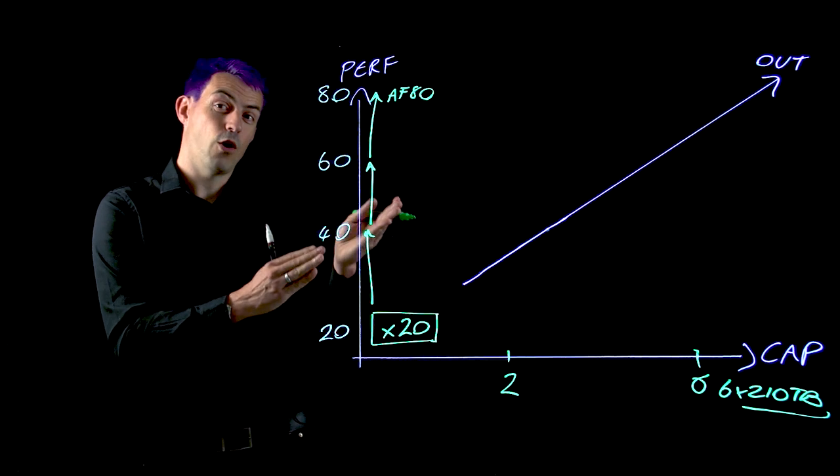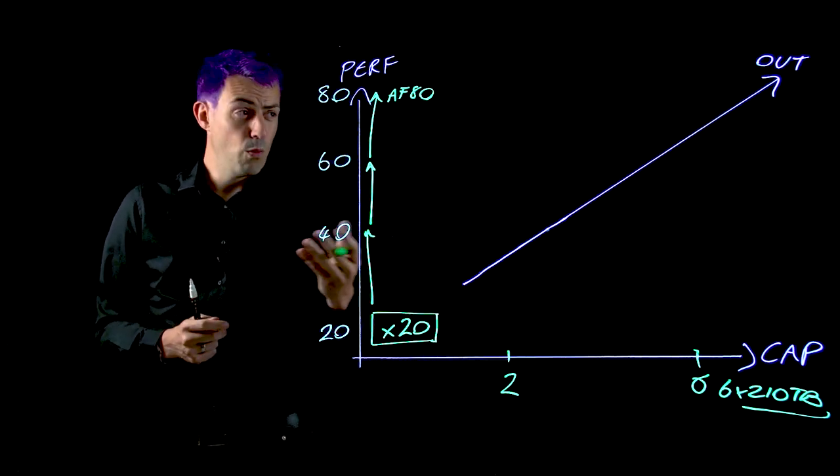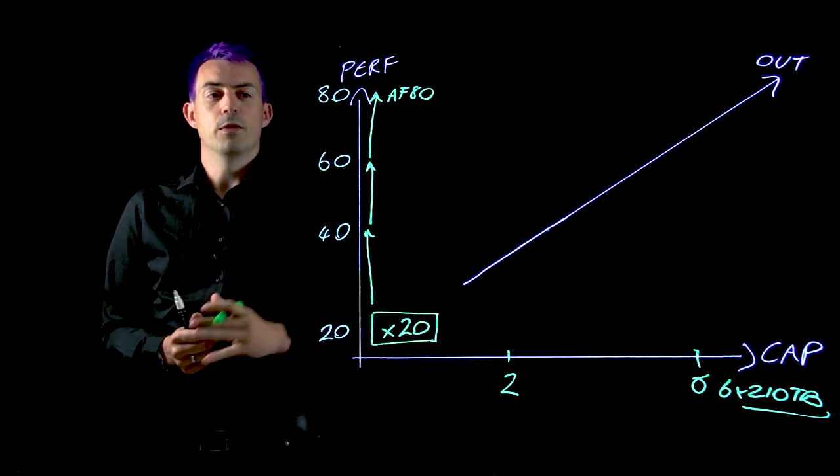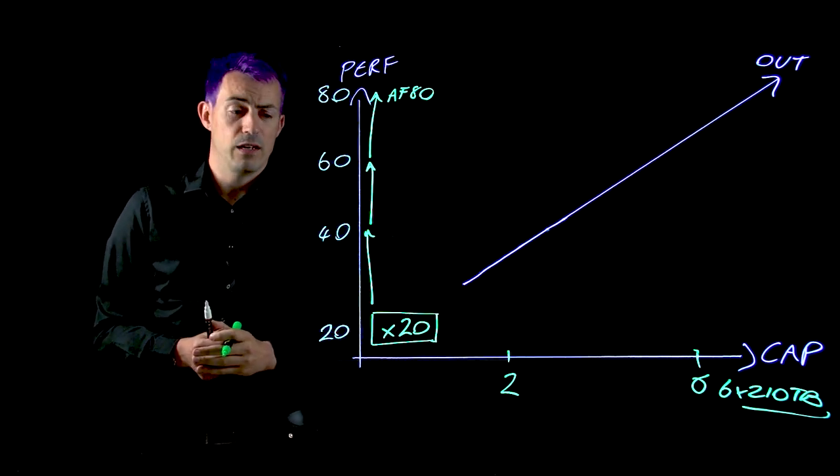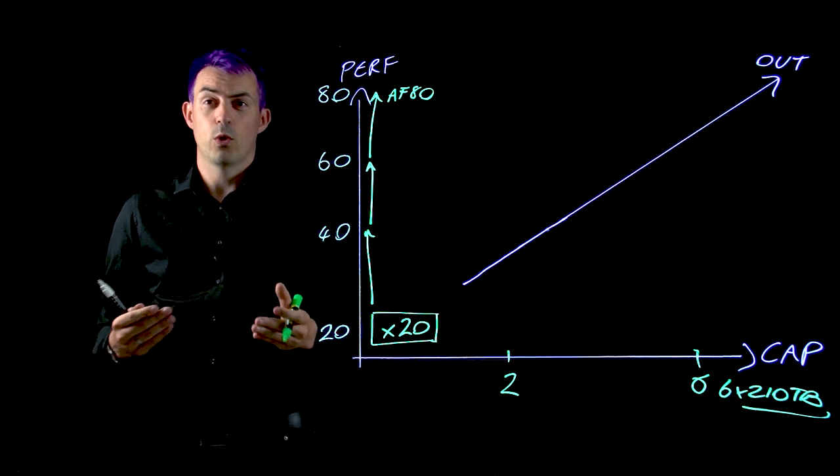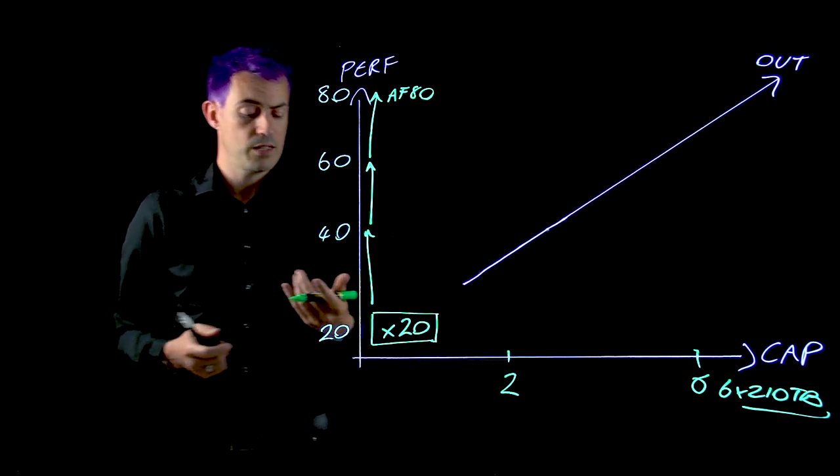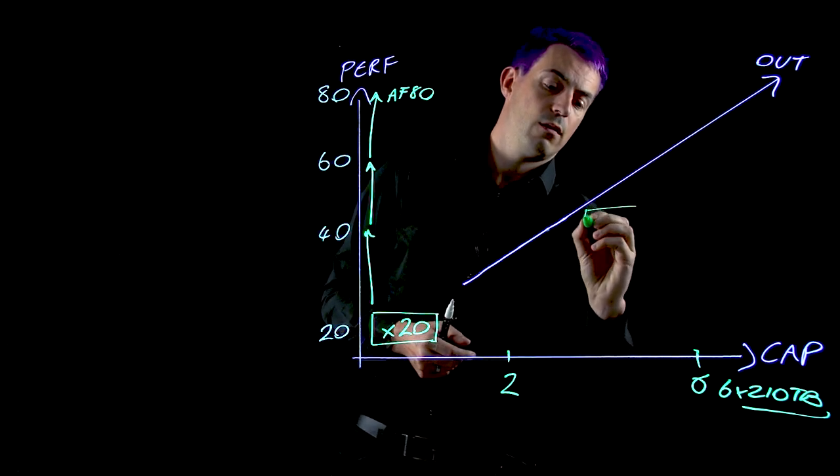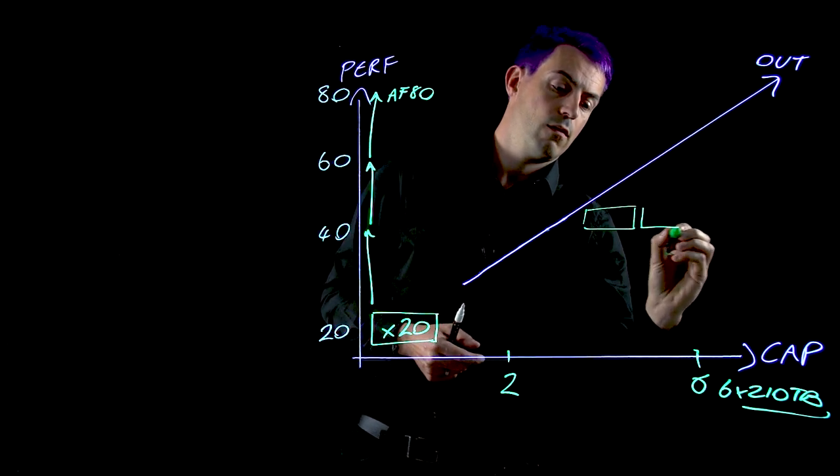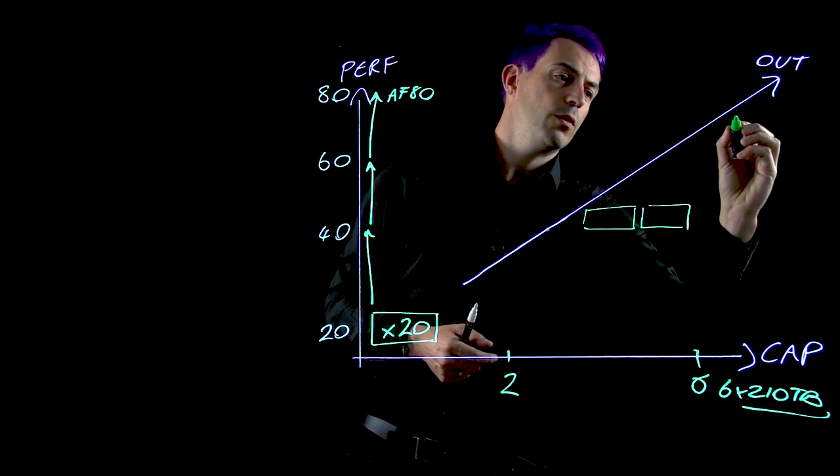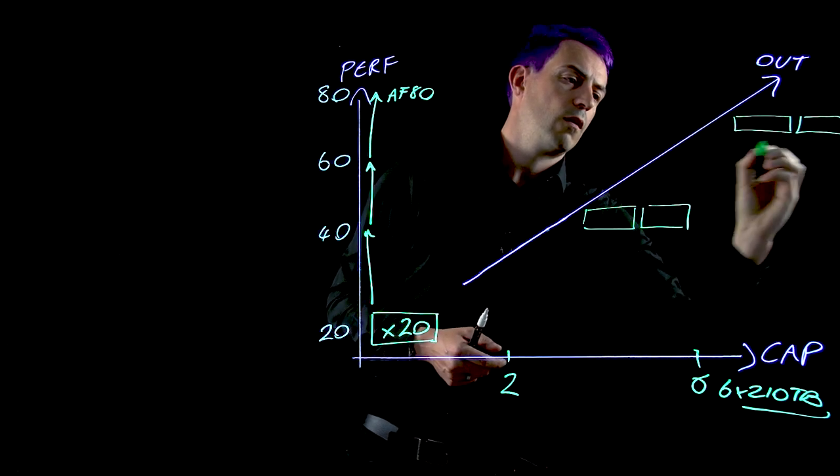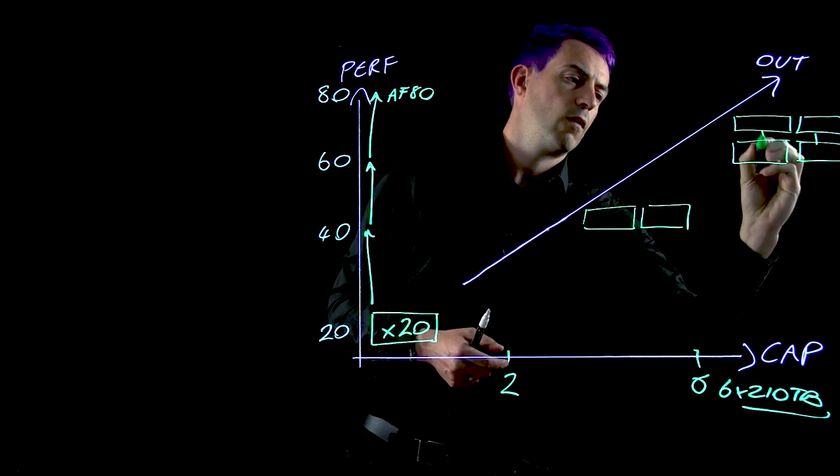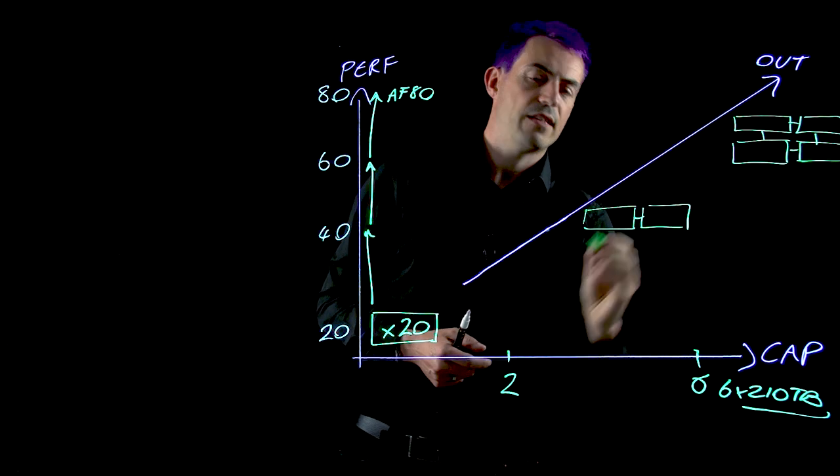Now you might notice I've forgotten a single arrow, so we've scaled the performance as much as we can in a single array, so of course what we want to do is to scale out. Luckily, Nimble has the ability to cluster not only two but four heads together.